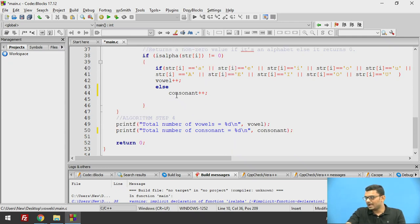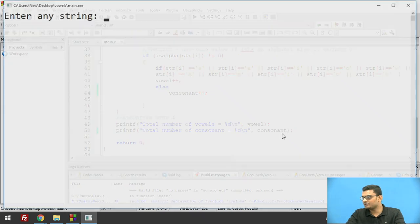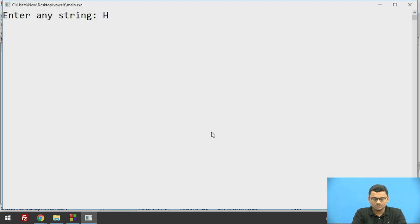And at the end I am printing the total number of consonants which are stored here. Now I am going to execute this program and we shall see the output. Hello world is my string with an exclamation mark.